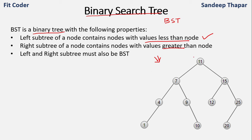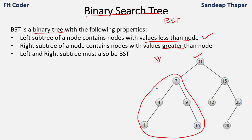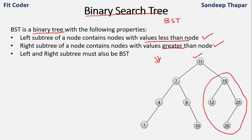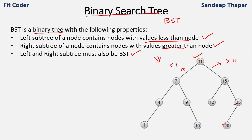The first property says that the left subtree of a node should have values less than the node. For node 11, the left subtree values are 7, 4, 1, 9, and 10 — all less than 11. The second property says the right subtree should have values greater than the node, so nodes 15, 12, 25, and 20 are all greater than 11.